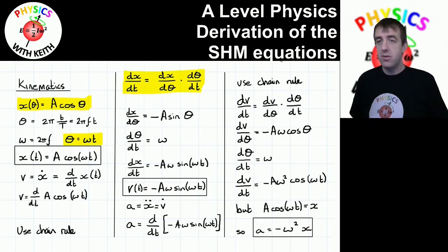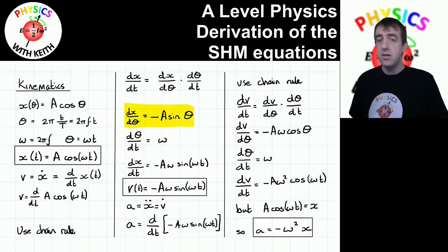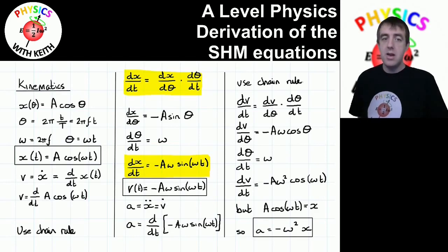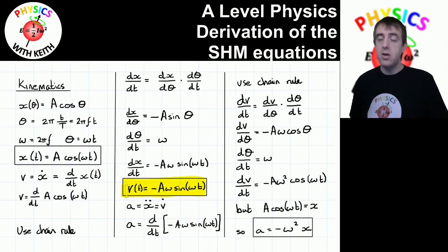This is an easy computation. d(ωt)/dt is just ω, and d/dθ of A cos θ becomes −A sin θ, because d(cos θ)/dθ = −sin θ. Using the chain rule, we get dx/dt = −Aω sin(ωt). Because dx/dt is the velocity as a function of t, this is the expression for velocity — another very important expression. If you know the time, the angular frequency, and the amplitude, you can calculate the velocity at that time for a body undergoing simple harmonic motion.